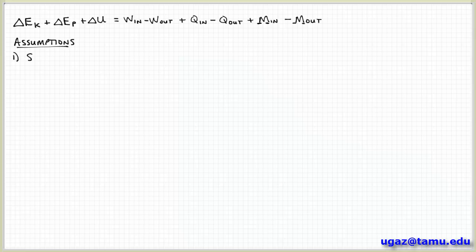So now we're going to make a few assumptions that can help us try to simplify this relationship a little bit. And so the first assumption we're going to make is that we're at steady state. So if we're at steady state then the net rate of change, the initial minus final state, is going to be the same. So all these terms on the left hand side go to zero.